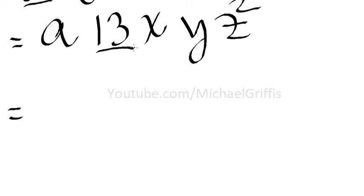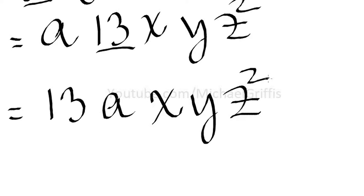This 13 here, we always write that out front. With integer coefficients or real numbers of any kind, you always write them out front. We've got time for another one. This one's going to be kind of long.